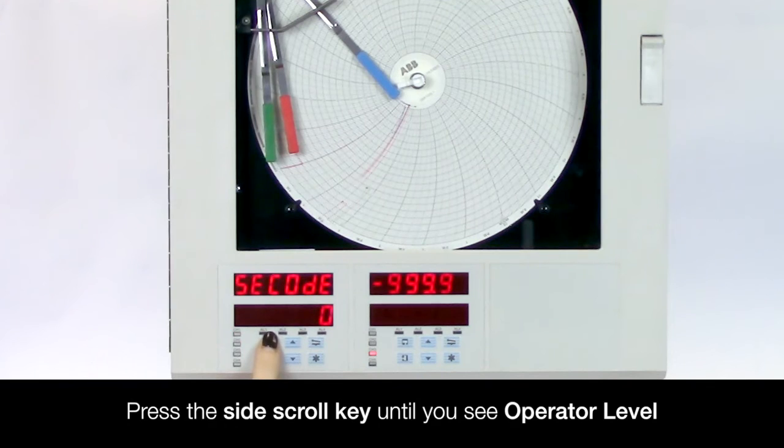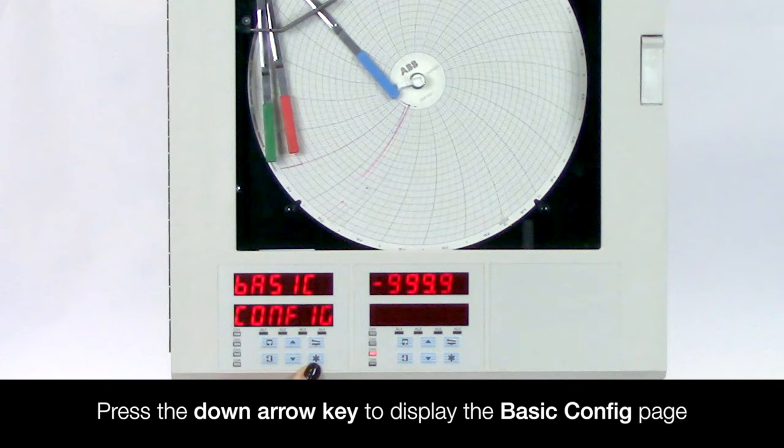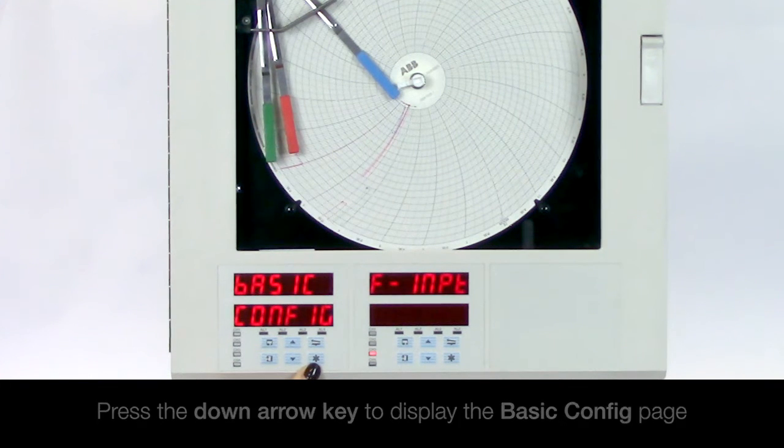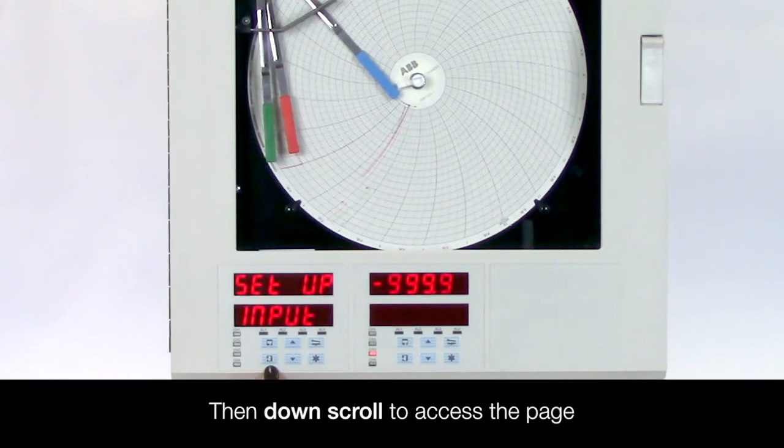Press the side scroll key until you see the operator level displayed. Then press the down arrow key to display the basic config page. Using the side scroll key navigate to the setup input page and then use the down scroll key to access the page.